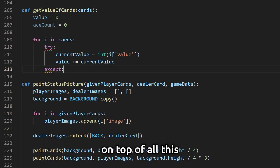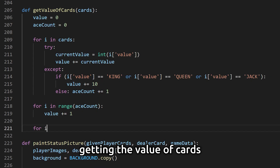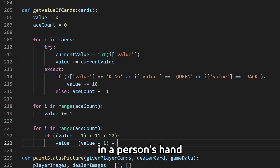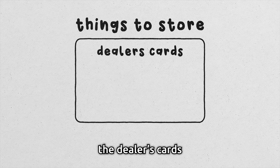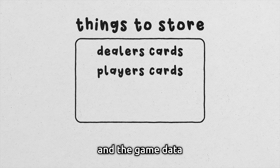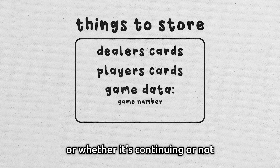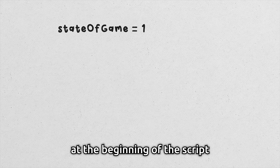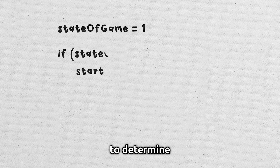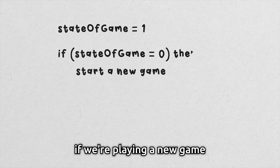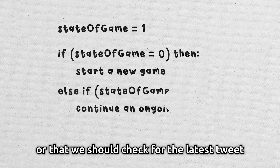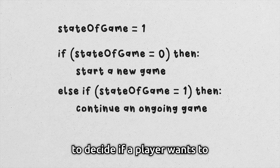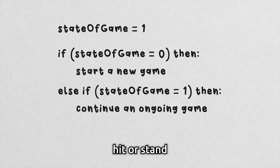On top of all this, I needed to write some functions like getting the value of cards in a person's hand, and store some local information about the current game — the dealer's cards, the player's cards, and the game data, such as the game number or whether it's continuing or not. This will be used at the beginning of the script to determine if we're playing a new game or that we should check for the latest likes to decide if a player wants to hit or stand.